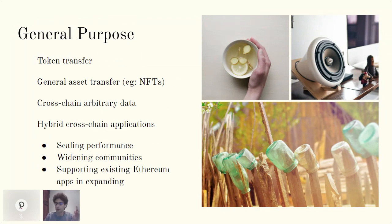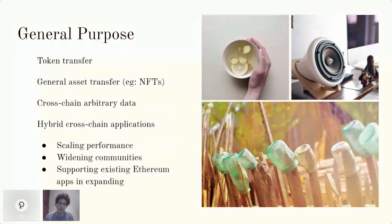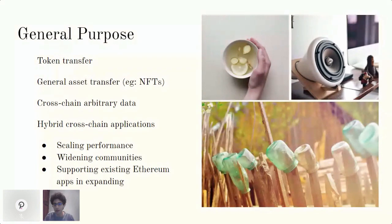There are various different use cases for cross-chain applications. One is to scale — an application may have a heavy computation portion that it wants to run on Polkadot because Polkadot can do it faster. Another purpose is to widen communities, so instead of applications purely running on Polkadot or purely on Ethereum, a cross-chain application can allow the two communities to interact within the same application. And then another major use case is existing Ethereum apps that want to expand their reach into the Polkadot ecosystem — our bridge is going to help enable that.